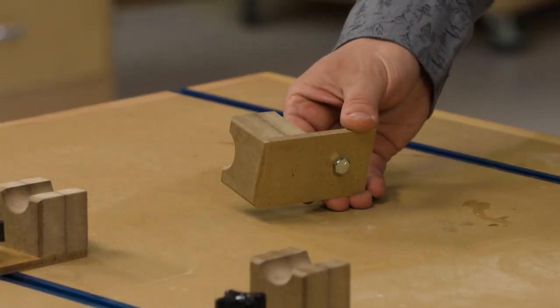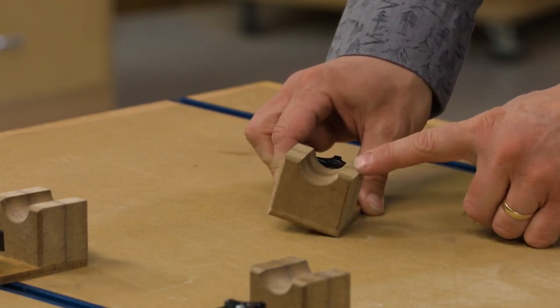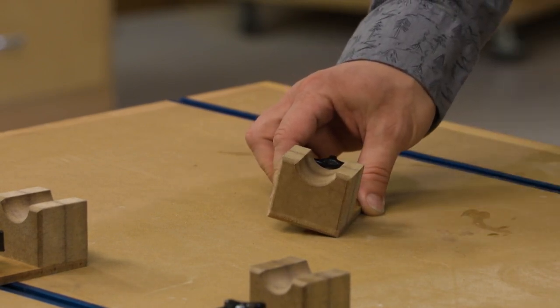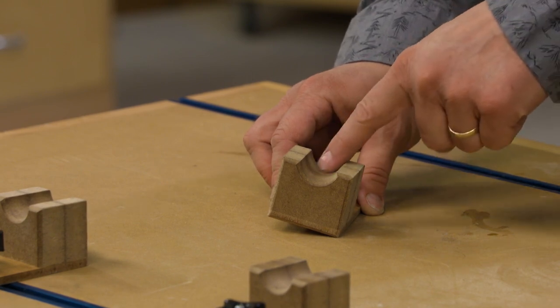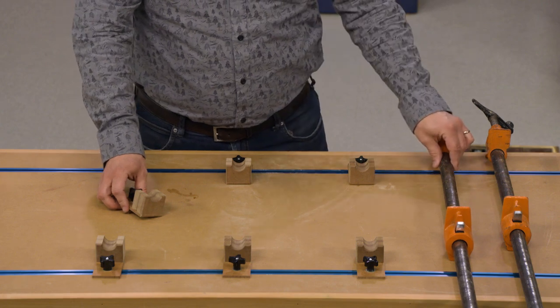Each of the cradles consists of a quarter inch hardboard base, and on top is glued two pieces of MDF. The top of the cradle is cut out to match the curvature of the pipe clamp, but if you're using bar clamps you can see how you can adapt that.